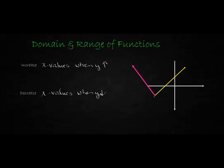If you were standing right at the vertex and wanted to go to the yellow section, are you going up or down as you move from left to right? That's where you go up — so that's where you're increasing your x values. The other side confuses most students. If I start on the left and move to a bigger x value from left to right, I actually go down in y values — so that would be a decrease.